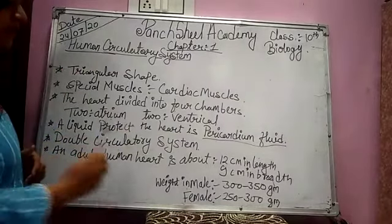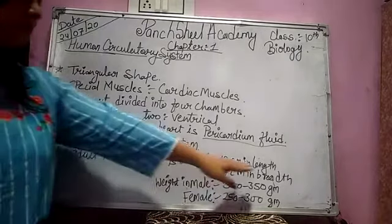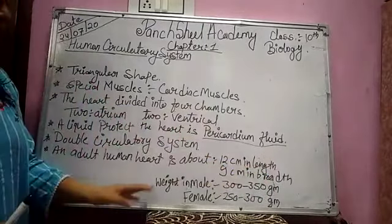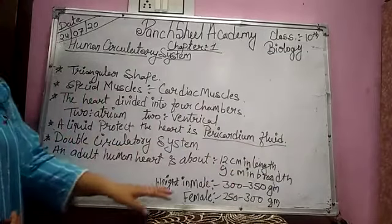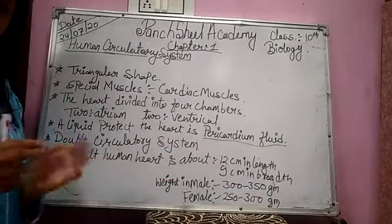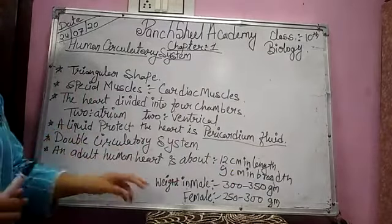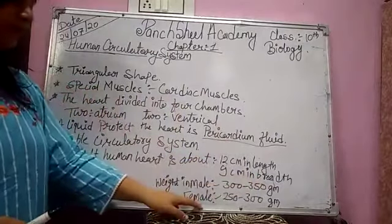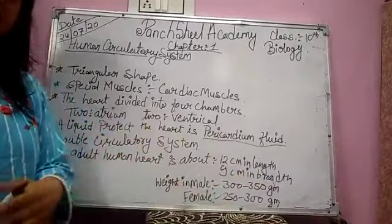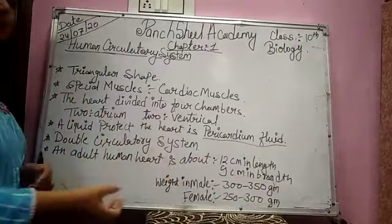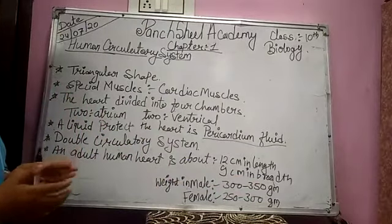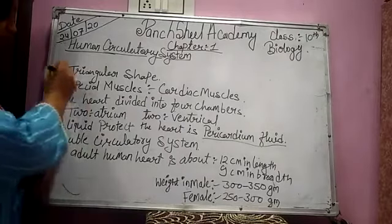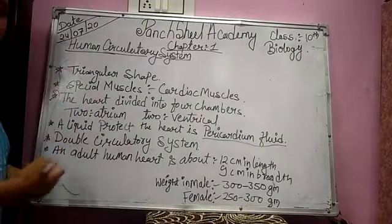In an adult, the human heart is about 12 cm in length and 9 cm in breadth. Regarding the weight of the human heart, males and females have different weights. In males it is 300 to 350 grams, and in females it is 250 to 300 grams. This is the average weight of an adult human heart. Write down all these points in your copy.